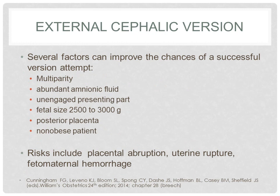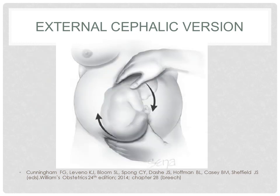Several factors can improve the chances of a successful version attempt, including multiparity, abundant amniotic fluid, unengaged presenting part, fetal size of 2,500 to 3,000 grams, posterior placenta, and if the patient is not obese. External cephalic version should be carried out in an area with ready access to a facility equipped to perform an emergency cesarean delivery. The fetus is moved in a forward roll — each hand grasps one fetal pole and the fetal buttocks are elevated from the maternal pelvis and displaced laterally, then gently guided toward the fundus while the head is directed toward the pelvis. If the forward roll is unsuccessful, a backward flip may be attempted. Version attempts are discontinued for excessive discomfort, persistently abnormal fetal heart rate, or after multiple failed attempts.